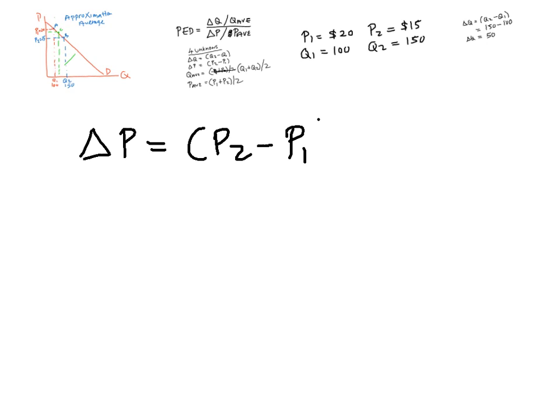Change in price. P2 minus P1. 15 minus 20 equals minus $5. The minus sign is very important. Price elasticity of demand must always be a negative value. So one of your four unknowns must be negative.